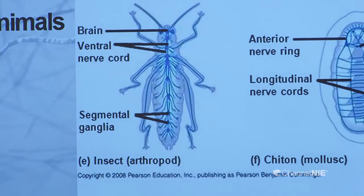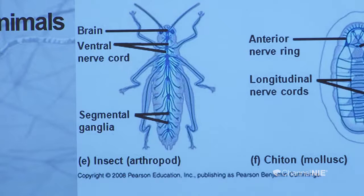Arthropods have a more complex nervous system. They also have a brain situated dorsally, and ventral nerve cords which run in two cords along the length, forming segmented ganglia at different places. Some arthropods have very prominent photoreceptors which are important for obtaining stimuli from the surrounding environment.